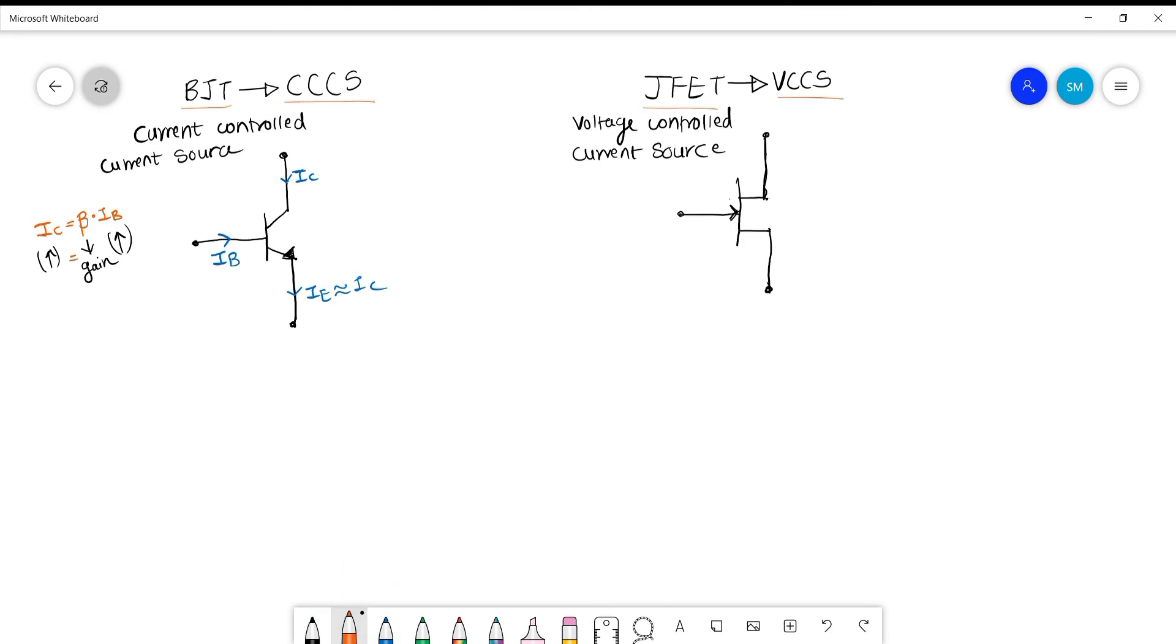Now we will try to design an equivalent model. We know that emitter is common, so this is the common terminal. I will write the name of each terminal so you will understand better. This is emitter, this is base, and this is collector. I will draw emitter first, so this is the emitter terminal. Now I will draw the base terminal, which is connected to emitter.